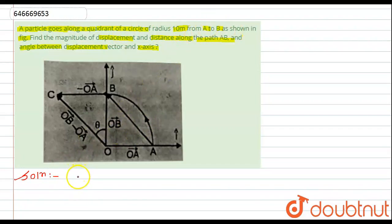From here we can write the radius for this quadrant circle is 10 meter. That means the value of vector OB will be equal to vector OA. This is given to us equals to the radius of the quadrant circle, that will be equals to 10 meter. That means here this is 10, this is also 10.